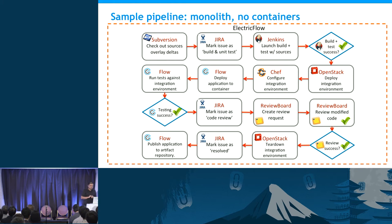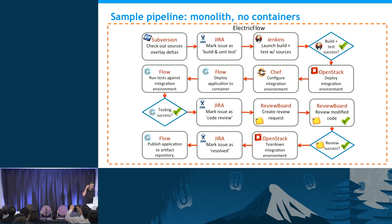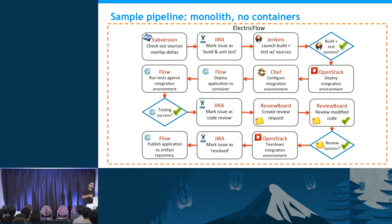Let's talk about continuous delivery pipelines. This is an example of a pipeline for a monolith — it's a dated slide based on Subversion. This is really what it takes for a commit, from pre-commit all the way to where the build artifact gets produced and published to an artifact repository. The code is in Subversion and, if it's Java, the Maven module gets published. Source control and artifact repository. People would also write Chef recipes — a blueprint of how you want your middleware configured, like WildFly or Tomcat.